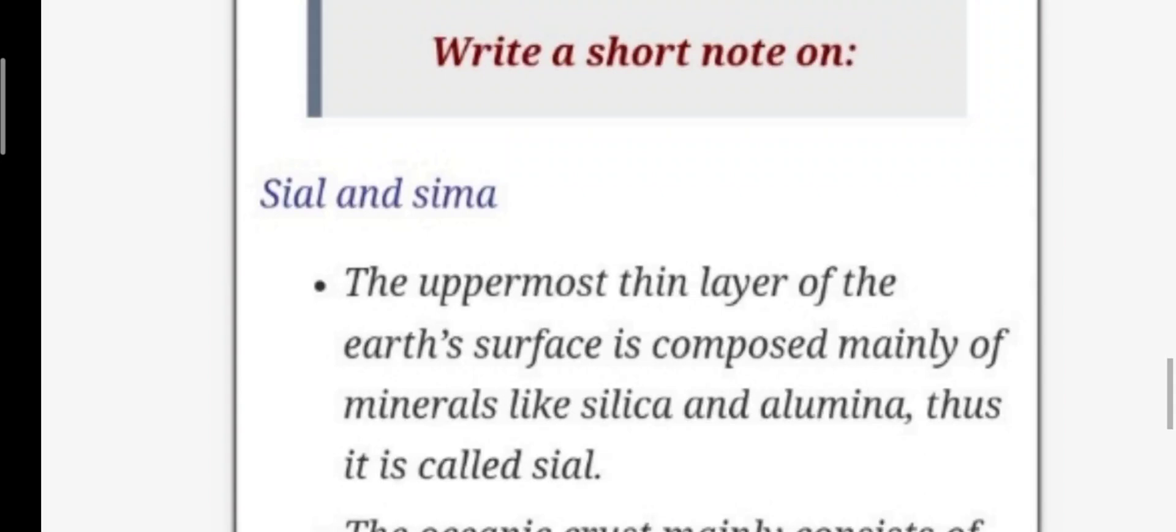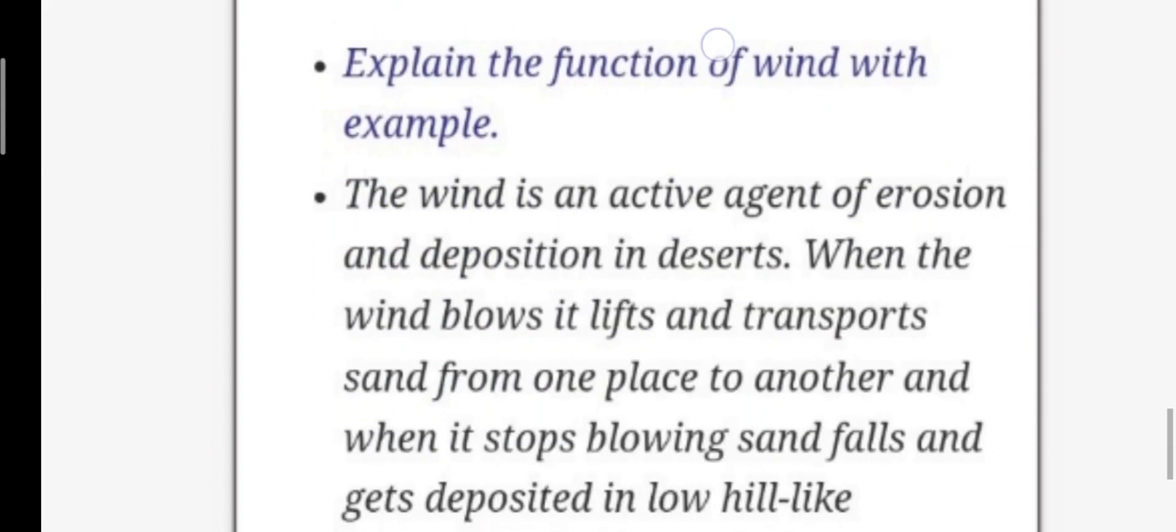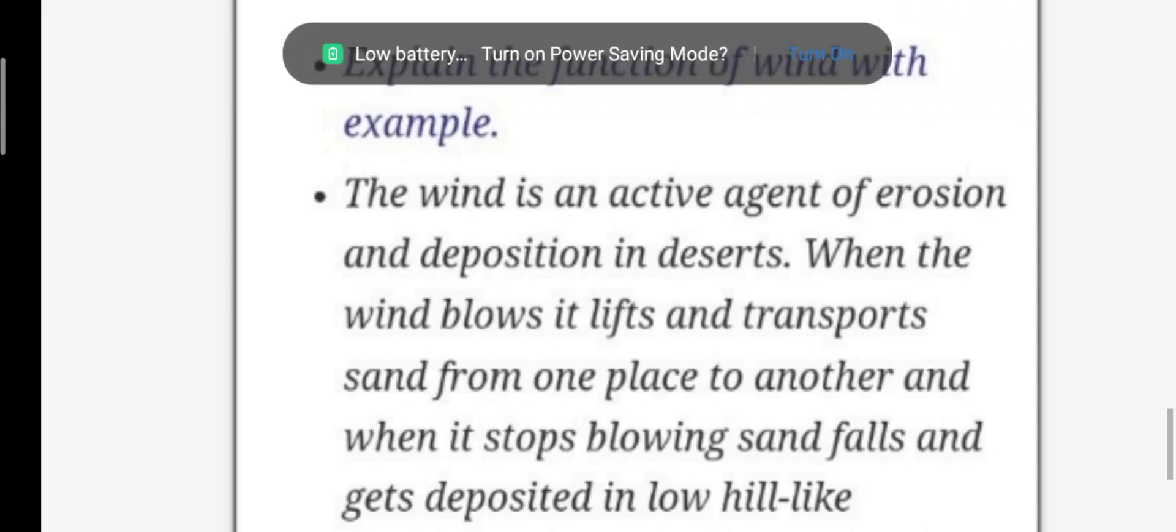Now here we have to write short notes. First we have to write on sial and sima. See, the uppermost thin layer of the earth's surface is composed mainly of minerals like silica and alumina, thus it is called sial. The oceanic crust mainly consists of silica and magnesium, it is therefore called sima. Next question, next short note.